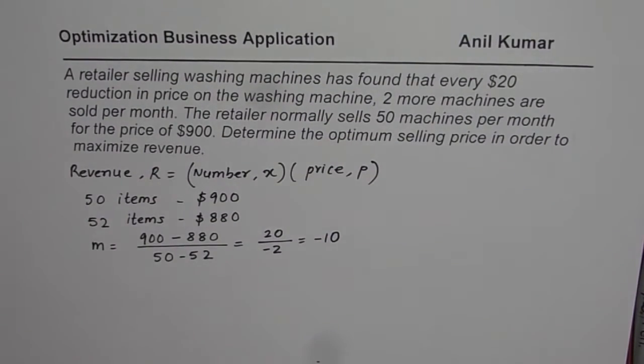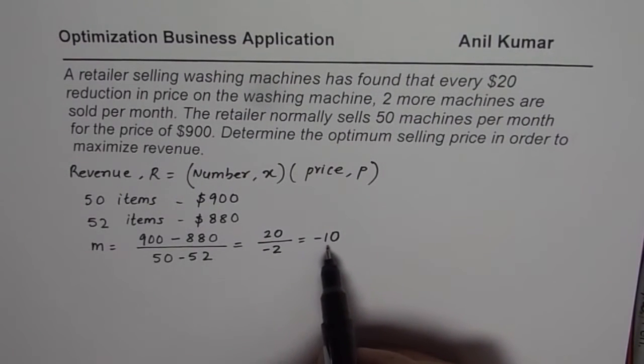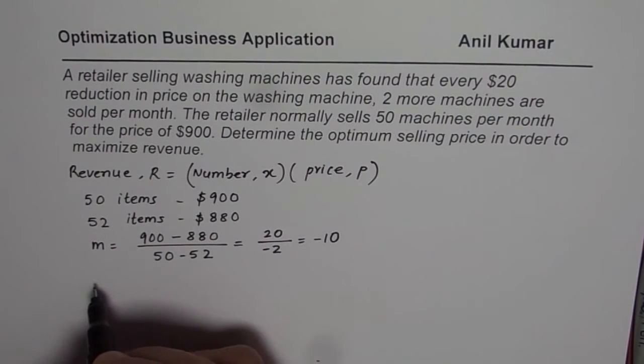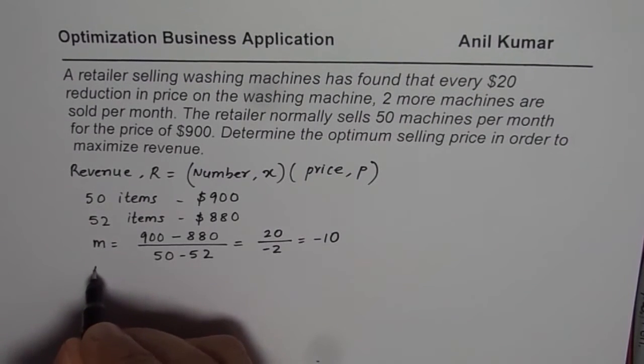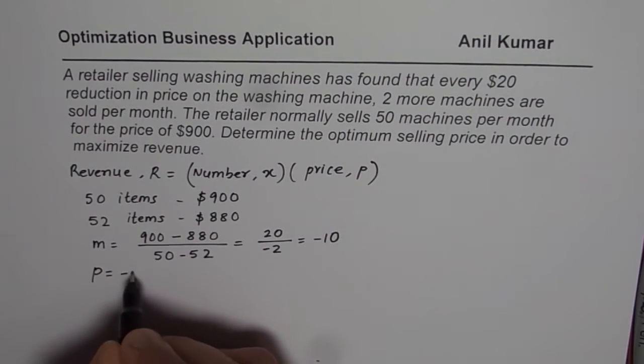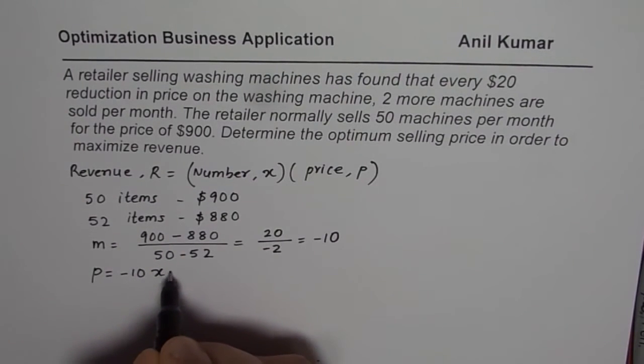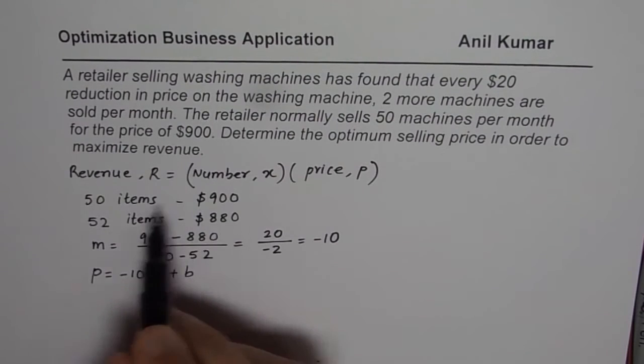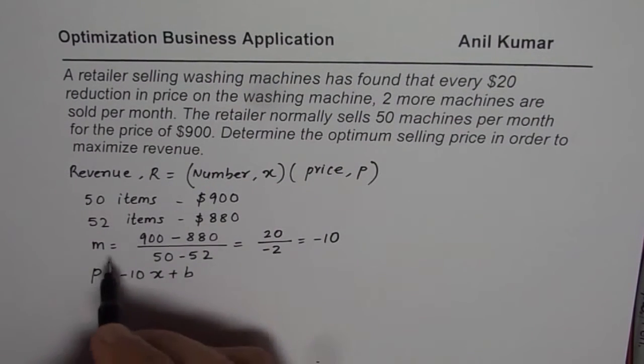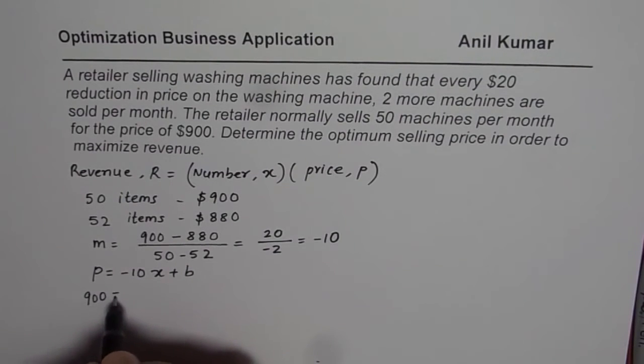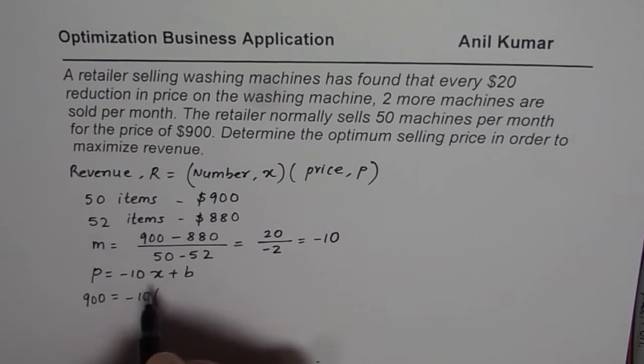So for every reduction of $20, two more, that means for every 10 there is one more. From here you can get the equation in the form of Y equals to MX plus B. You can say P, the price, is equals to M is minus 10 times X plus B. We will find B using one of the terms. We can use 50. So 900 is the price, minus 10, X number of items is 50. We can get the value of B.